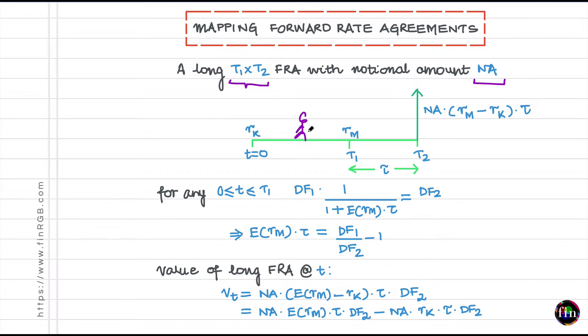If I were to try and find out its value at any time between 0 and T1, then to find this value I need to find out what is my best guess of this RM. Remember this RM was observed only when you reach this time T1. To get the best guess of this RM, this is the equation which I will use: the discount factor when I am standing at this point in time between today time T and T1, let us call it DF1, times the discount factor between T1 and T2 should ideally be equal to the discount factor between today and T2. Let us call it DF2.